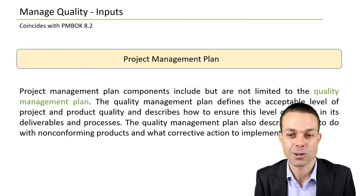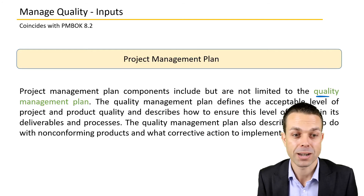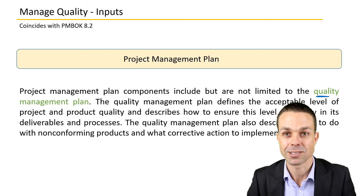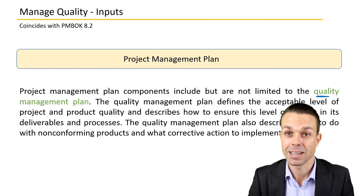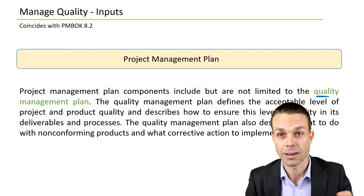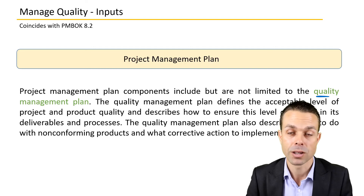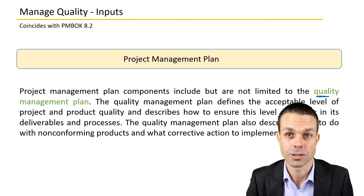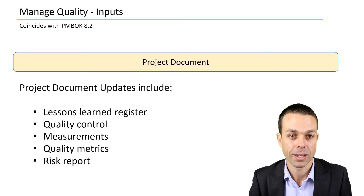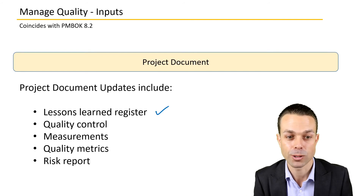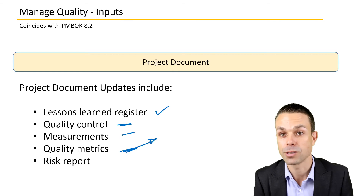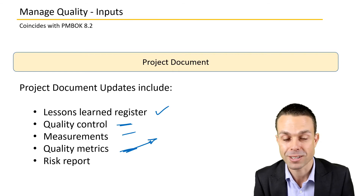Looking at the inputs in more detail: the project management plan, and mostly the quality management plan — what is the process we agreed on for checking that deliverables are fit for purpose? Is it testing, giving it to customers for feedback, or building error-proofing into the deliverable itself? Project documents include lessons learned from other projects, quality control measurements, and quality metrics — the definition of good quality for our item.